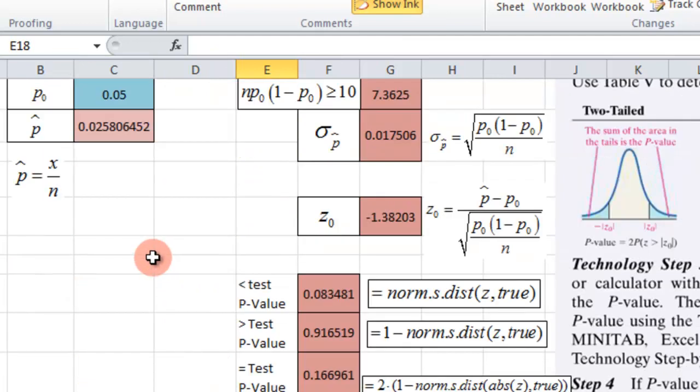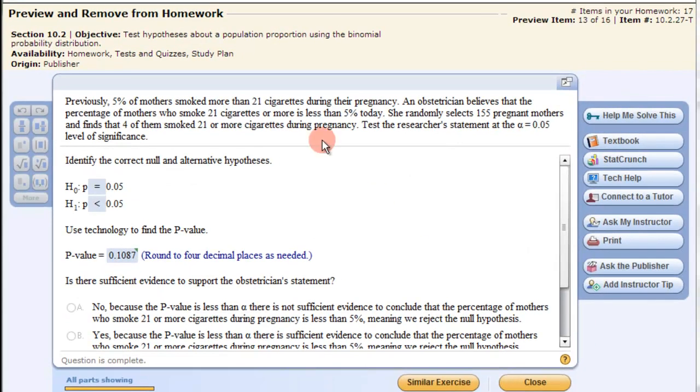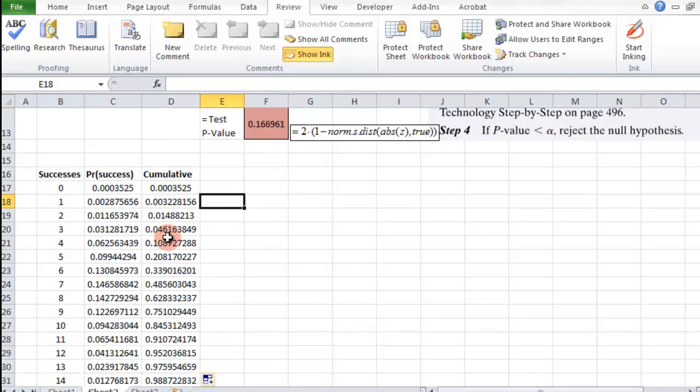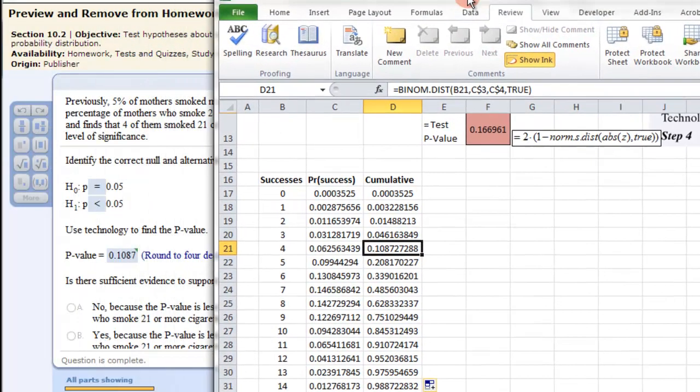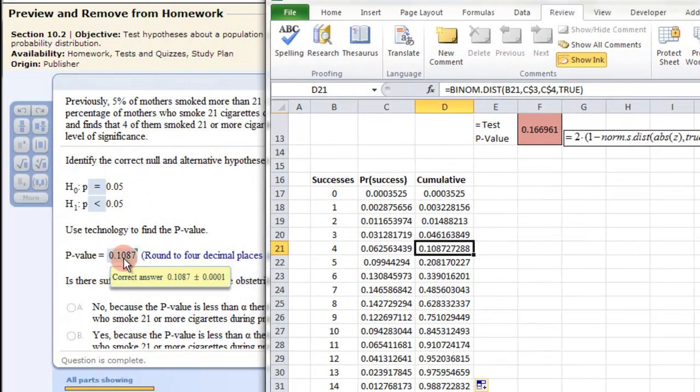Because this is going to be our p-value, we're going to use this information to get our p-value. This is a less than problem. It finds that 4 of them smoked 21 or more cigarettes during the pregnancy. So we want the area less than that, less than 4, which is the cumulative probability. So we want 0, 1, 2, 3, or 4. This would be the cumulative. This would be our p-value, 0.10872. And that's what we have here for the p-value, 0.1087.